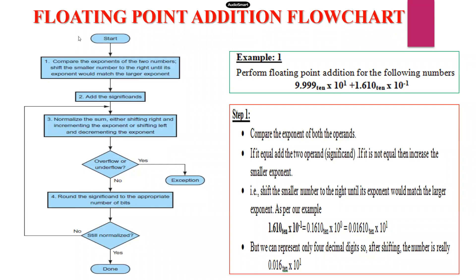This is the floating point addition flowchart. We start by comparing the exponents of the two numbers, then shift the smaller number to the right until its exponent matches the larger exponent. If the two numbers' exponents are not equal, we find which one has the smaller exponent, then shift it to the right until the exponents match. After matching, the exponents are equal for both numbers, then we add the significands.